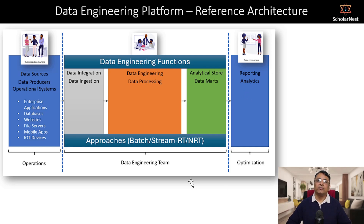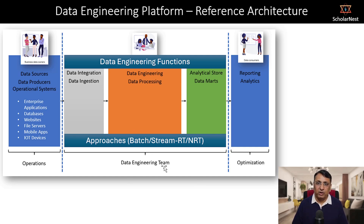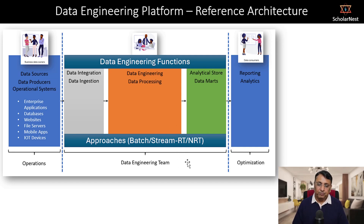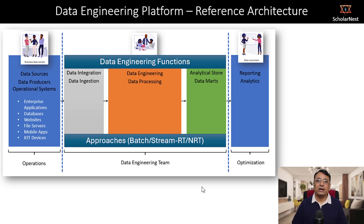Beyond the three functions, there are three approaches in a typical data engineering project: some projects are implemented using a batch processing approach, some require a real-time stream processing approach, and others may require a near real-time stream processing approach. So we have three approaches for implementing data engineering projects.